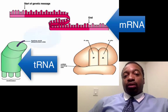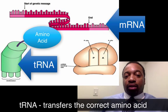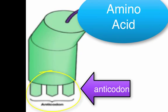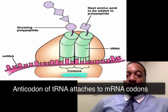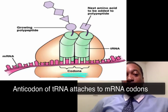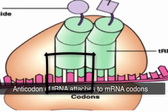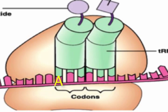The job of tRNA is to bring the correct amino acid. At the top of the tRNA there's an attachment site for an amino acid, and at the bottom there's what we call the anticodon. The triplet bases on mRNA are called codons, so the bottom of the tRNA are called anticodons — meaning the tRNA and mRNA are complementary to each other. If there's an A on mRNA, there better be a U on the tRNA.